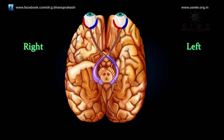Finally, optic tract axons from still other ganglion cells project to a collection of neurons that lies between the thalamus and the midbrain, in a region known as the pre-tectum. This region is important as the coordinating center for the pupillary light reflex — that is, the reduction in the diameter of the pupil that occurs when sufficient light falls on the retina.